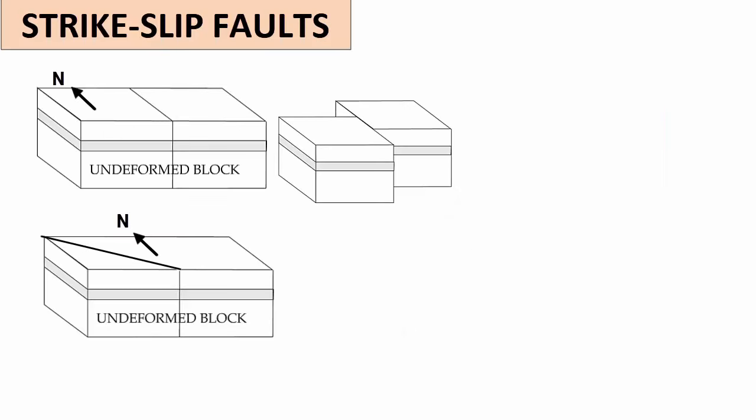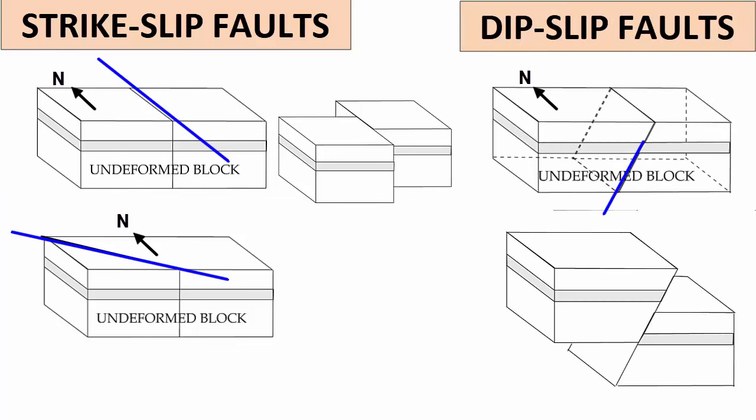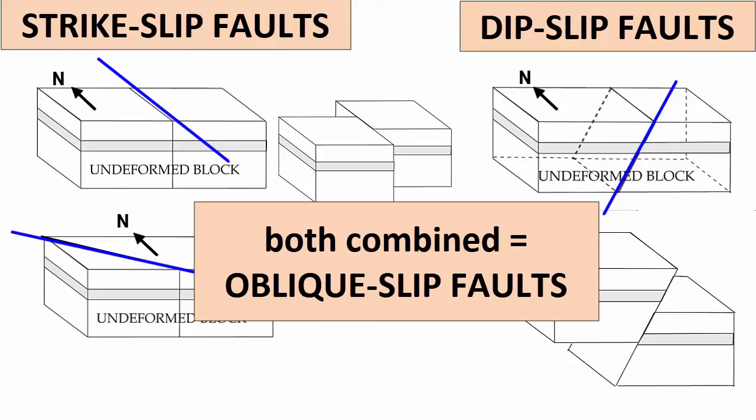Faults can be classified by the type of movement that happens along them. Faults that have near vertical fault planes and have horizontal slip along strike are called strike-slip faults. Strike is the orientation of the line that a fault plane makes when it intersects a horizontal surface. For example, the strike of this fault is due north. The strike of this fault is north 45 degrees west. Faults that have planes that dip at an angle between horizontal and vertical, and thus have vertical slip, are called dip-slip faults. Faults that experience movement along strike and along dip, the combination of the two, are called oblique-slip faults.